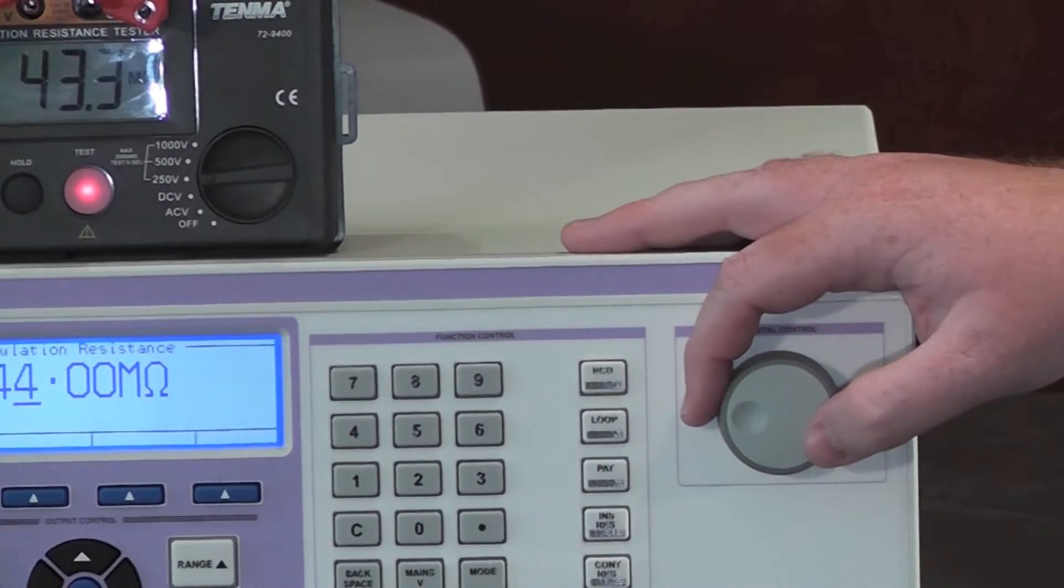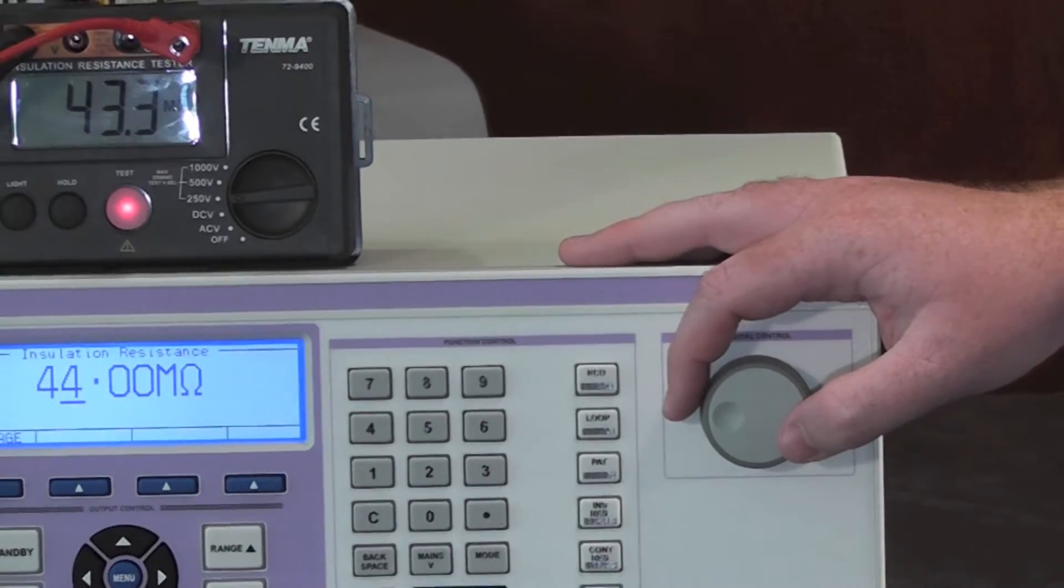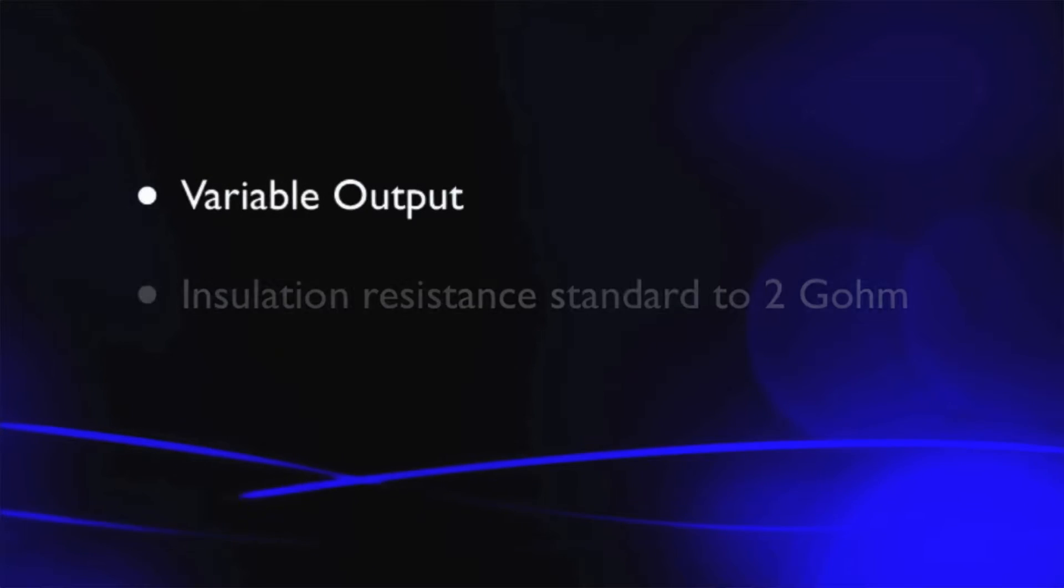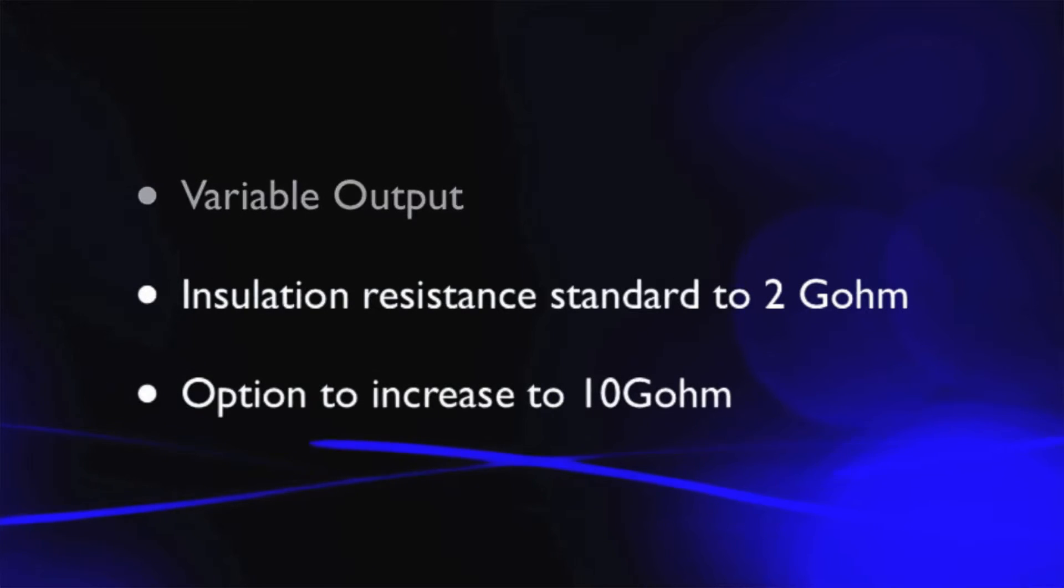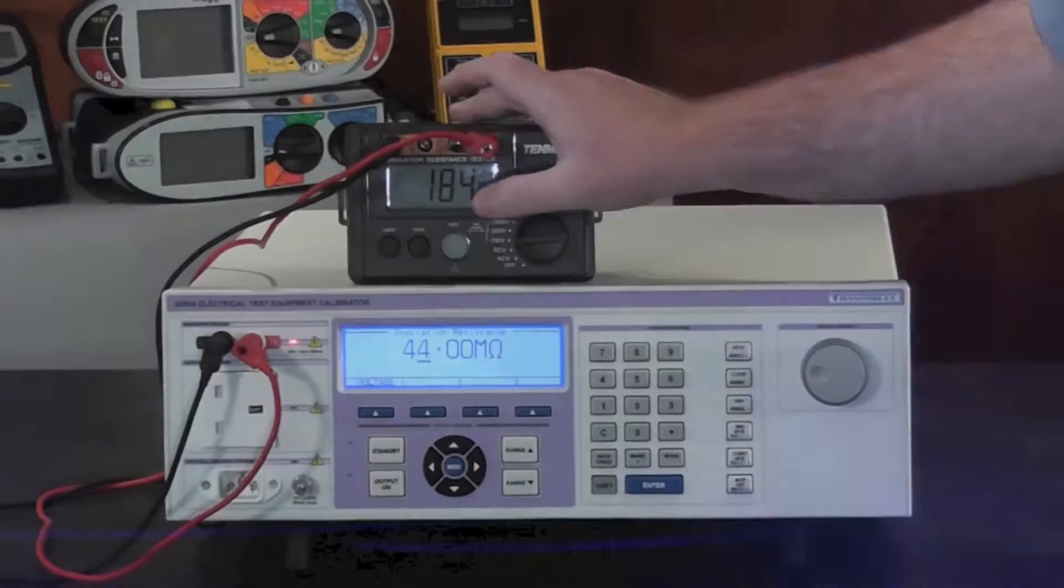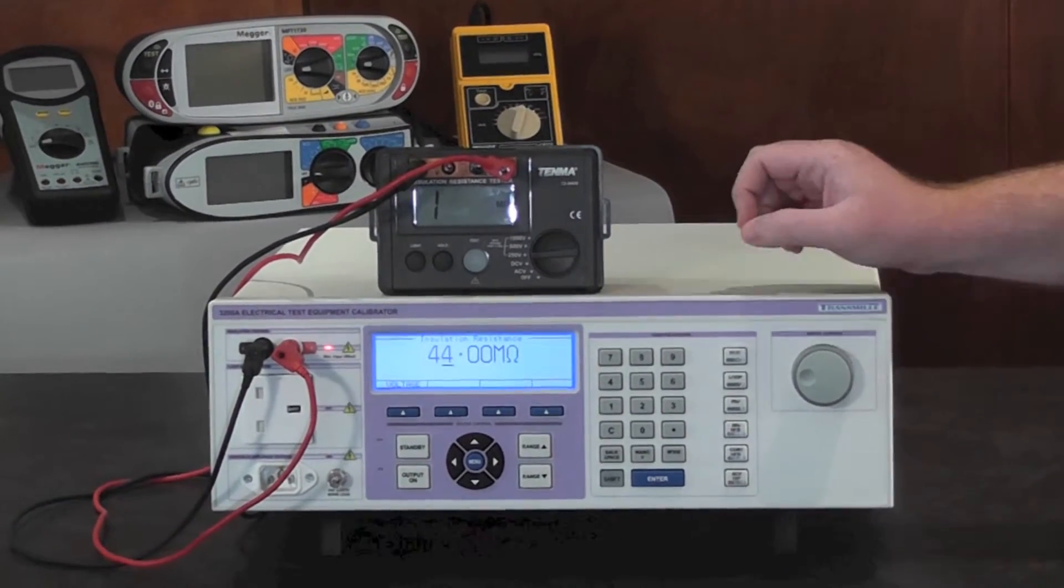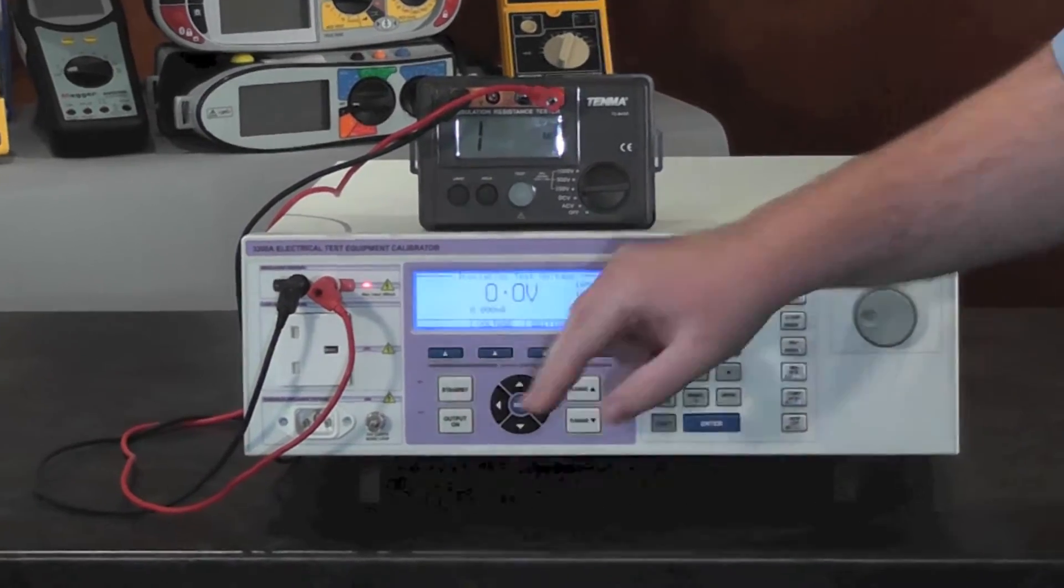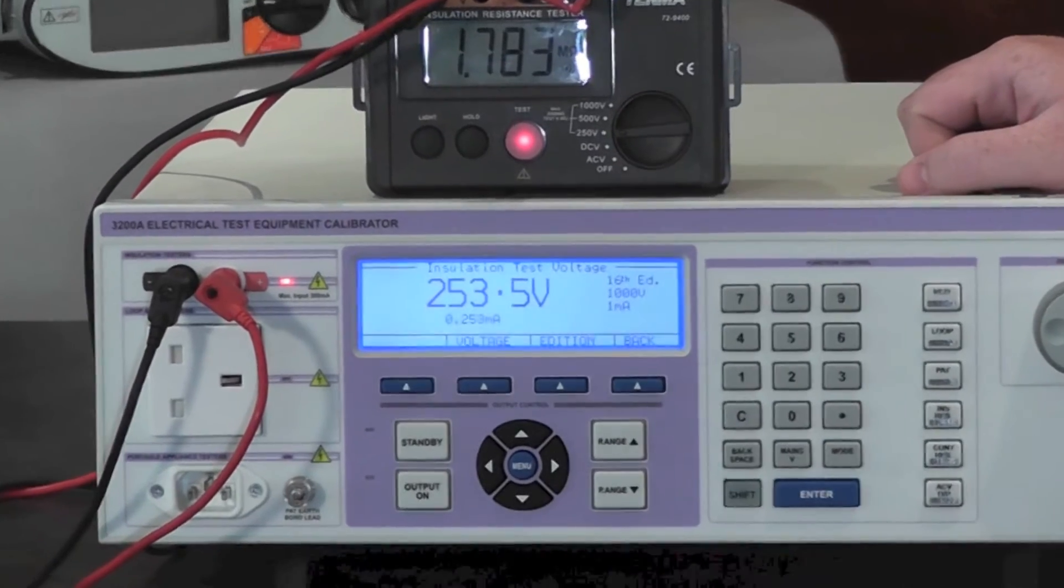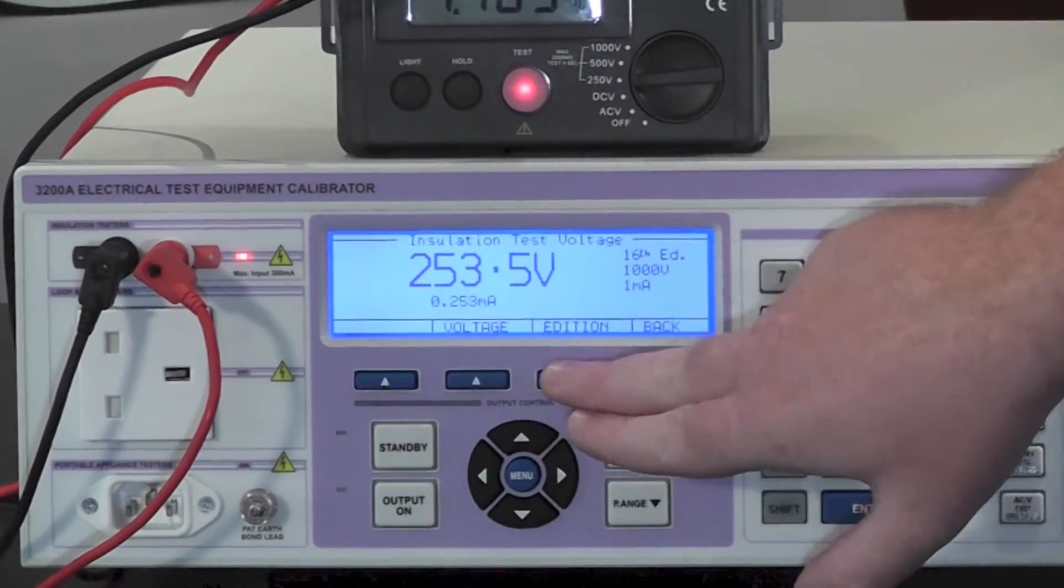The 3200A is fitted with insulation resistance to 2 gigaohms as standard but can be extended to 10 gigaohms. The 3200A also has the ability to measure the test voltage. This can be tested to both 16th edition regulations as well as 17th.